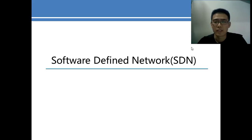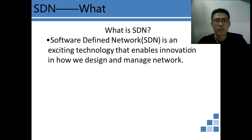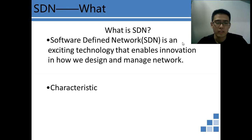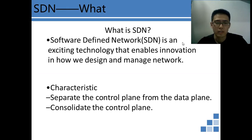First, Software Defined Network — SDN. What is SDN? SDN is an existing technology that enables innovation in how we design and manage networks. SDN consolidates the control plane so that a single software control program can control multiple data plane elements, such as routers, switches, and middleboxes. SDN has two main characteristics: one is that SDN separates the control plane from the data plane, and the other is that SDN consolidates the control plane.